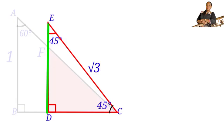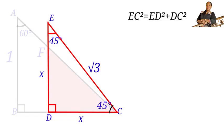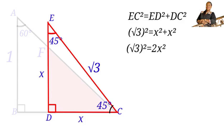Because triangle EDC is isosceles, side ED equals side DC. If we label ED as X, then DC is also X. Applying Pythagoras theorem on triangle EDC: EC squared equals ED squared plus DC squared. Substituting, we get (√3)² = X² + X², which simplifies to 2X² = 3.